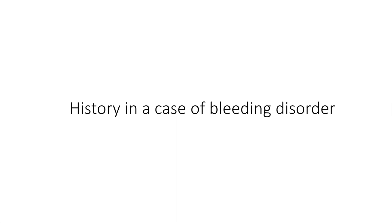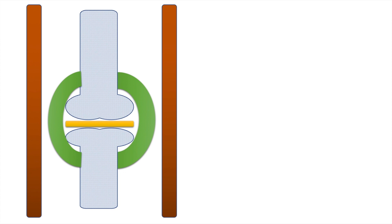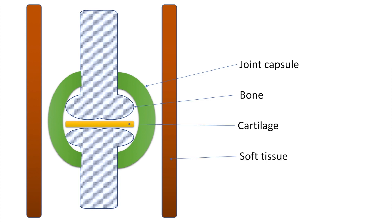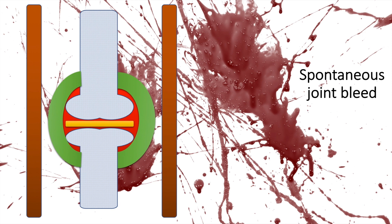We will now discuss the history to be taken in a case of a bleeding disorder. This is a schematic diagram of a joint with the joint capsule shown in green, the bone, the cartilage, and the soft tissue. If there is bleeding inside the joint, we must always think of a bleeding disorder, specifically hemophilia, because hemophilia A and B can present with hemarthrosis. Therefore, spontaneous joint bleed is always to be considered historically.